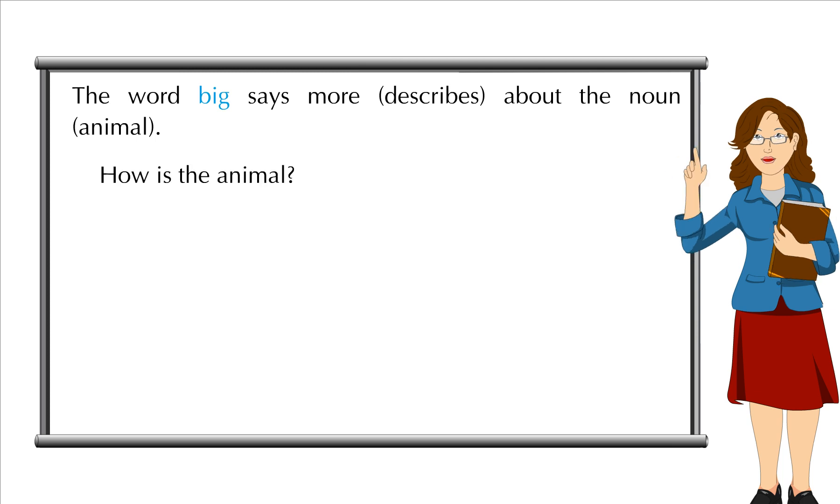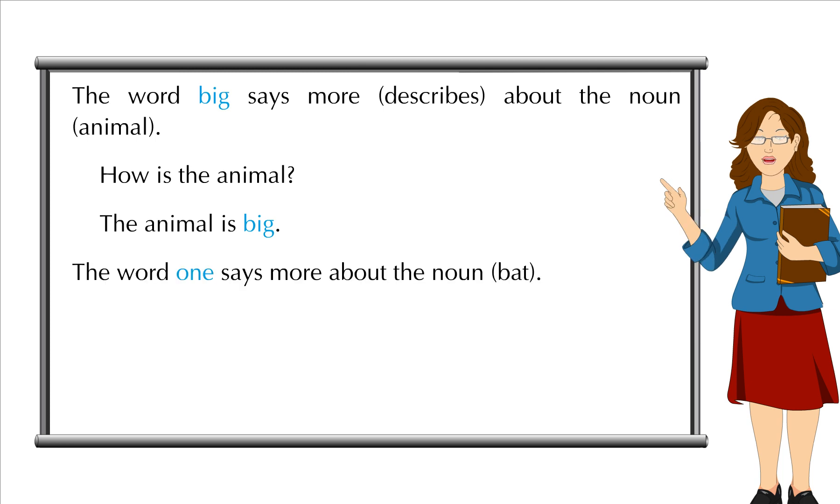How is the animal? The animal is big. The word one says more about the noun bat. How many bats are there? There is one bat.